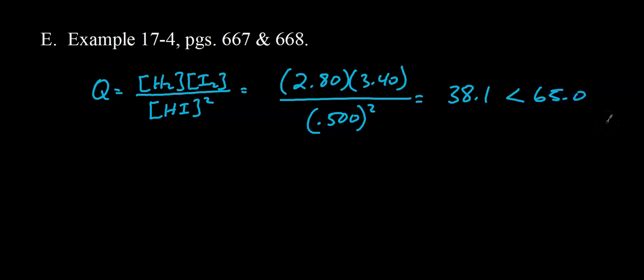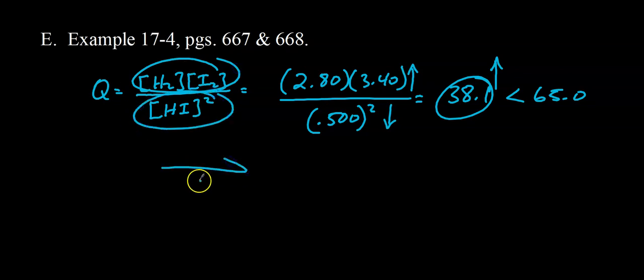So how can this system reach equilibrium? Well, this needs to go up. So how does that value increase? This has got to go up and this has got to go down. We need to increase the amounts of H2 and I2. We need to decrease the amount of HI. So we're talking about going faster in the forward direction. So the forward reaction needs to speed up or continue progressing until that system then reaches equilibrium.